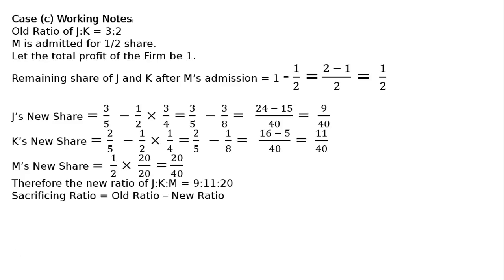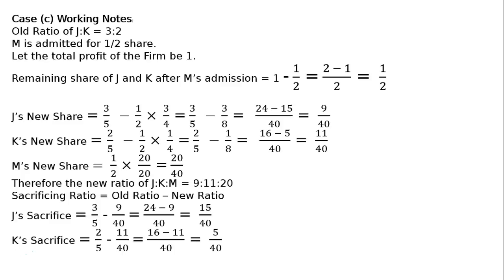Sacrificing ratio equals old ratio minus new ratio. J's sacrifice: 3/5 minus 9/40. With LCM 40: 24 minus 9 = 15/40. K's sacrifice: 2/5 minus 11/40. With LCM 40: 16 minus 11 = 5/40. Therefore, sacrificing ratio of J to K equals 15 to 5, which simplifies to 3 to 1.